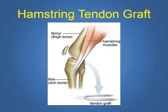This slide shows the appearance of the hamstring tendons, enclosed within the red circle, as they run down the inside part of the thigh and connect to the tibia just below the knee. These tendons can be taken to create a soft tissue graft, enclosed within the green box, which can then be used for ACL reconstruction.